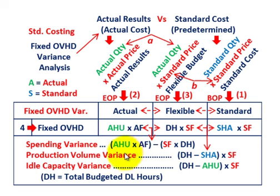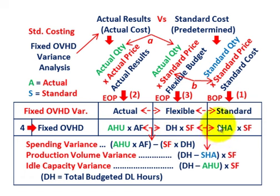Our production volume variance is the difference between our flexible and our standard amount. We have a common factor between the two — the standard fixed rate — so we can factor that out. The variance is just the difference between those total denominator hours and the standard hours allowed established from our standard, times our standard fixed rate.